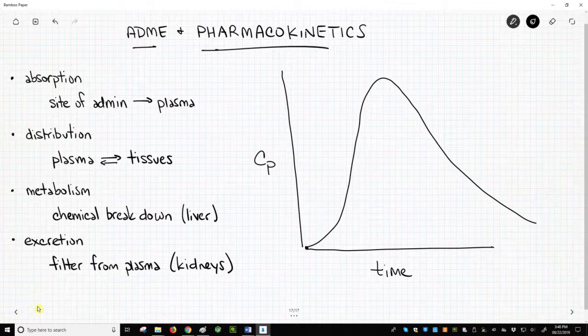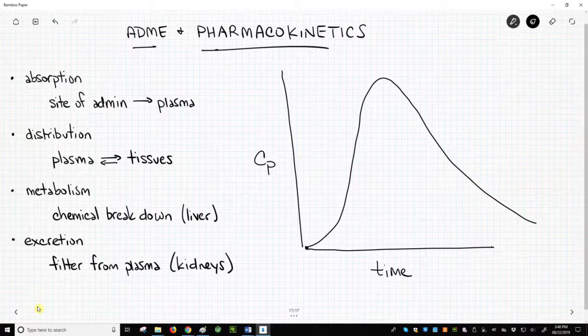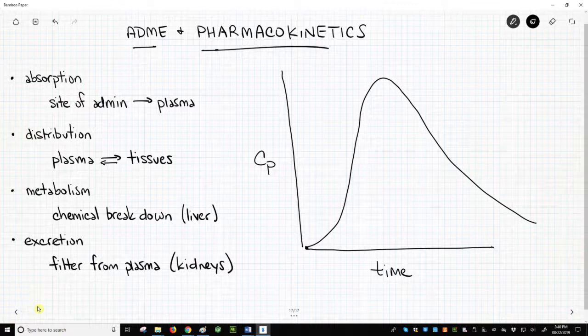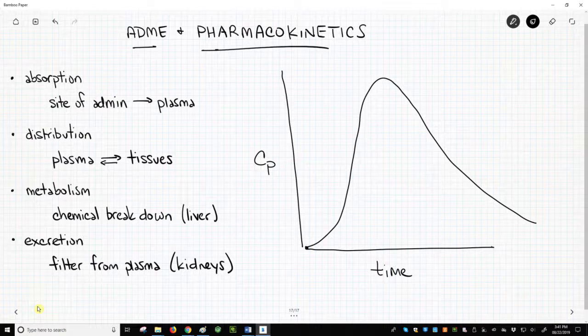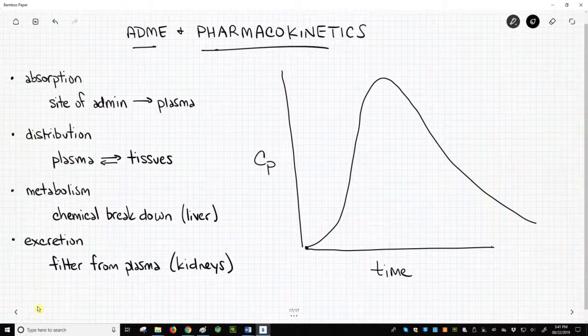Once the patient takes the drug, it passes into the stomach. Very soon the drug pill or capsule will break down and release the drug into the patient's digestive system. The drug will then be absorbed into the bloodstream. So, absorption is the movement of drug from the site of administration to the plasma.